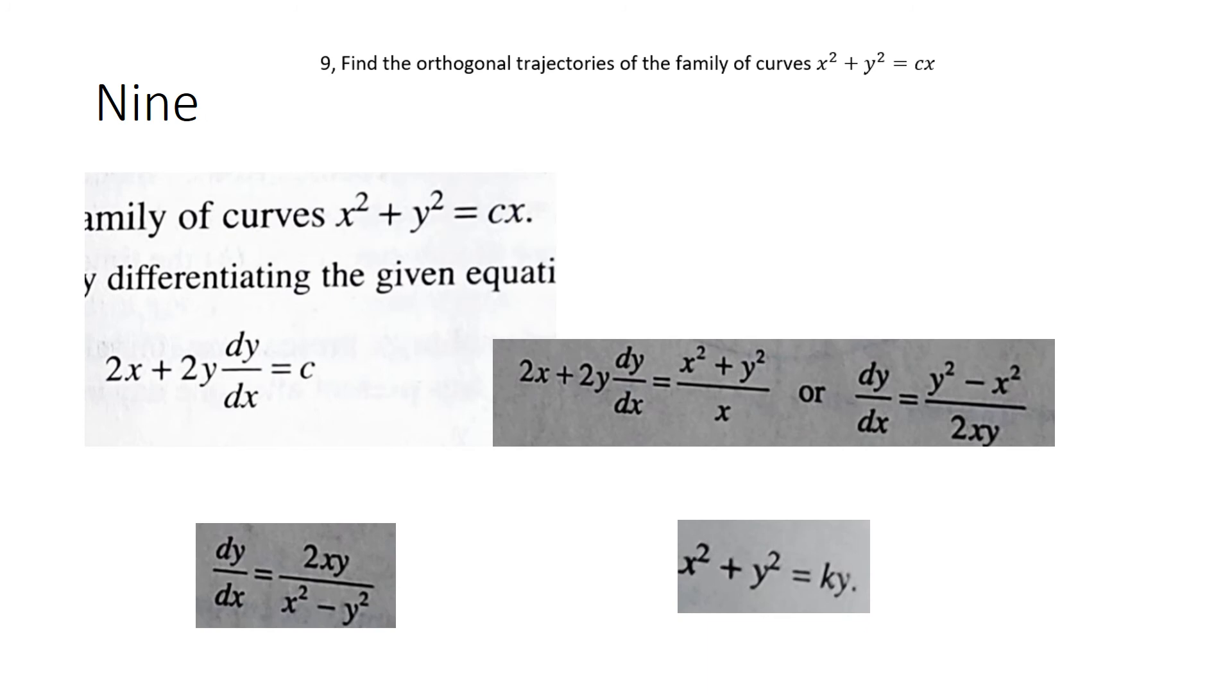Number nine, you would find the orthogonal trajectories of the family of curves. Now if you think about those curves, those are circles which are centered on the x-axis. So what we do is we take the derivative differential here of both sides, and we eliminate the c.